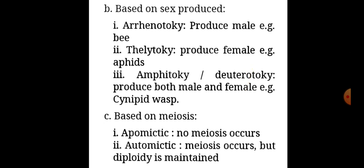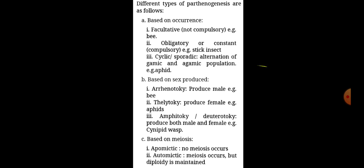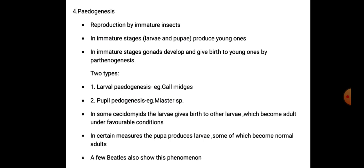Third, based on meiosis: apomictic parthenogenesis, in which meiosis does not occur; and automictic parthenogenesis, in which meiosis occurs but the diploid condition is maintained. Next type is pedogenesis.